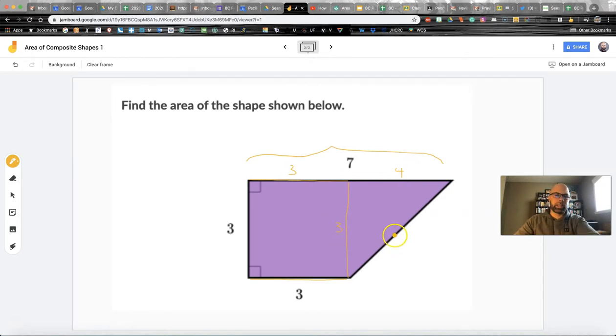So again, we're dividing these shapes into pieces. Let's find the area of the square first. So the square is side times side, or base times height, and that gives us nine. Easy peasy.